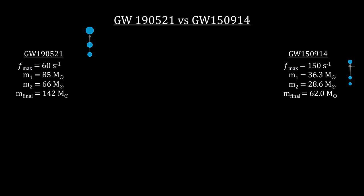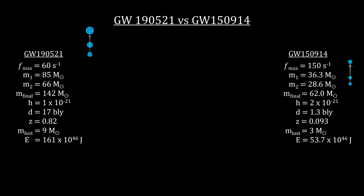This, along with the strain amplitude, gives us the luminosity distance to the source at 17.3 billion light-years. Note that the remnant mass is less than the combined masses of the two merging black holes by around nine solar masses. This mass difference was converted into the energy of the gravitational wave. That's almost triple the energy created by GW150914.